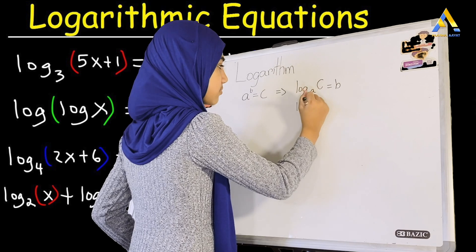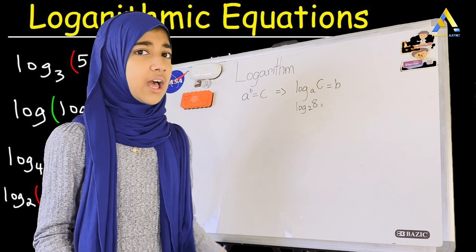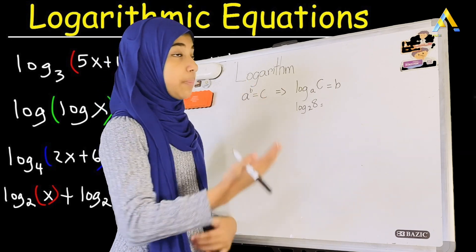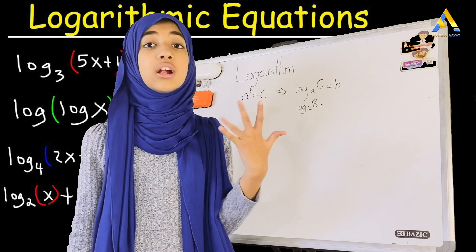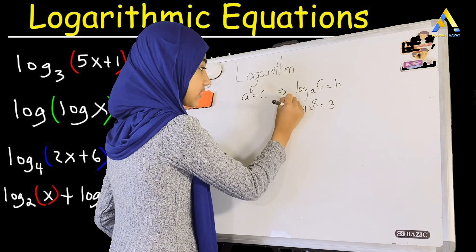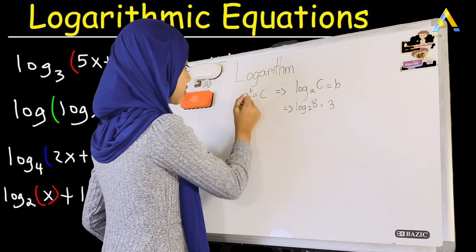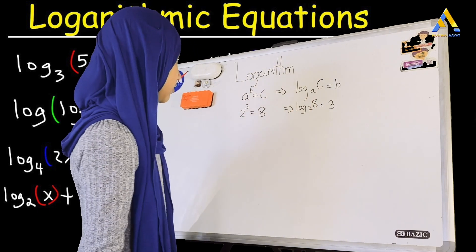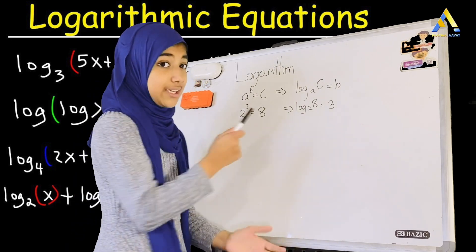Let me show you why this is actually true. Let's say we have log base 2 of 8 — what is it? All we need to know is: 2 to the power of what equals 8? We know that 2 times 2 times 2, or 2 to the power 3, is 8. So log base 2 of 8 equals 3. That's our answer, and 2 to the power 3 is 8.